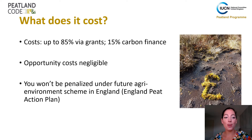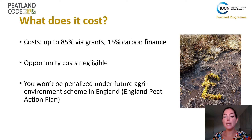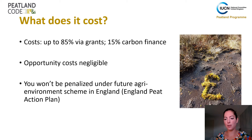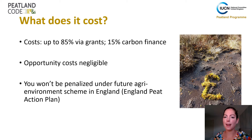So what does it cost to go through the code? The good thing is that the code allows up to 85% of your total project costs to be funded via public finance, so you need at least 15% of carbon finance. For example, in England you now have the Nature for Climate Peatland grant scheme where you can normally apply for up to 75% of your total project cost. The first round has just closed, but the next round is going to open at the start of next year.